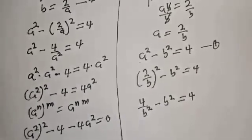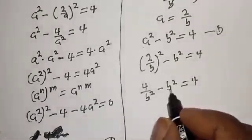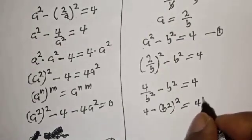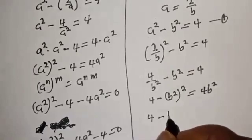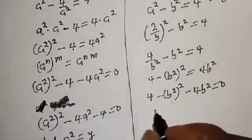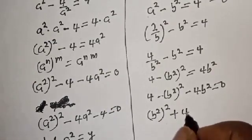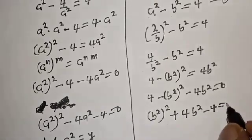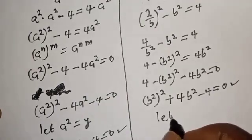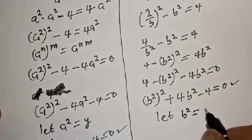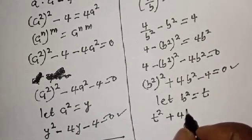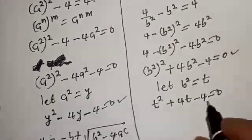Multiplying all through by b squared, we get 4 minus b to the fourth equals 4b squared. Rearranging: b to the fourth plus 4b squared minus 4 equals 0. Let t equal b squared, so t squared plus 4t minus 4 equals 0. This is a quadratic equation which can be solved using the quadratic formula.